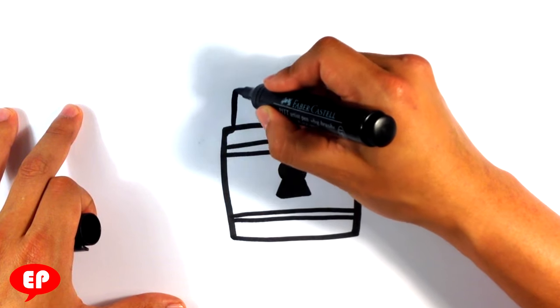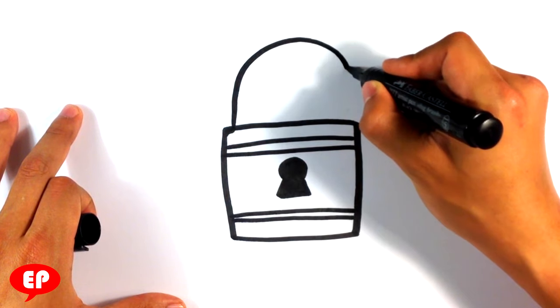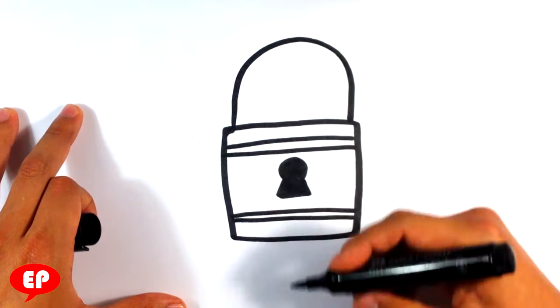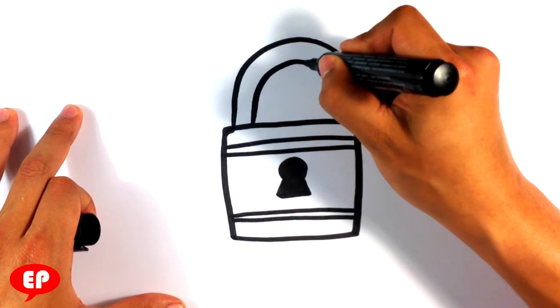Then I'm going to throw an upside down U, and then one on the inside as well.